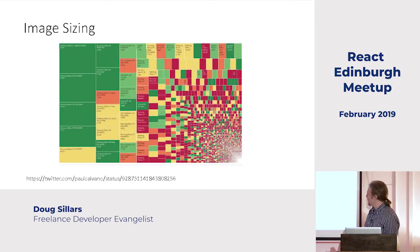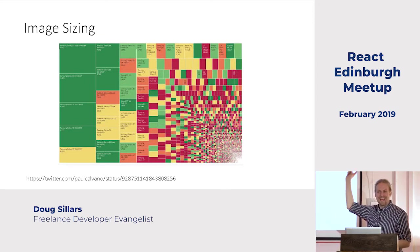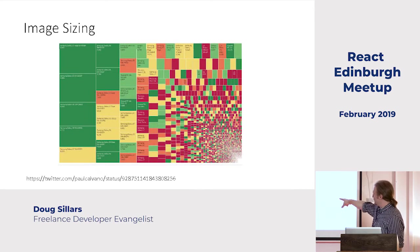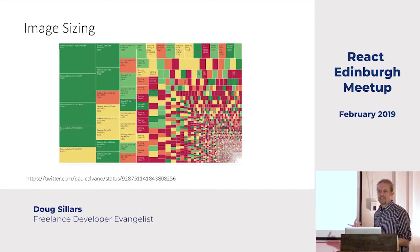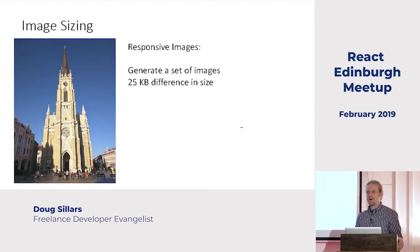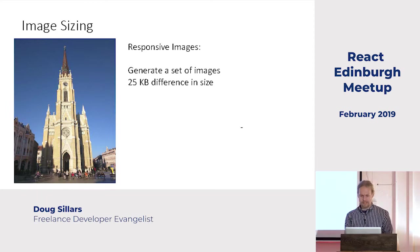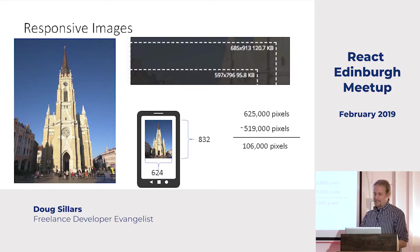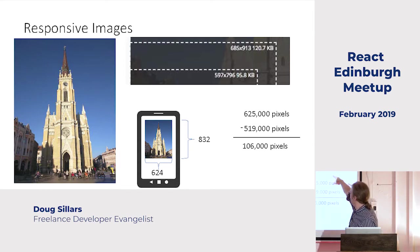When you look at all the Android devices out there, the size of the box shows market share and the color shows CPU speed — there are devices out towards the 'Android event horizon' that are really slow with different screen sizes. The solution is responsive images: you create a whole bunch of images that are all 25 kilobytes different in size. Now you're only throwing away 100,000 pixels instead of 12.5 million, and the new file is somewhere between 95 and 100 kilobytes.